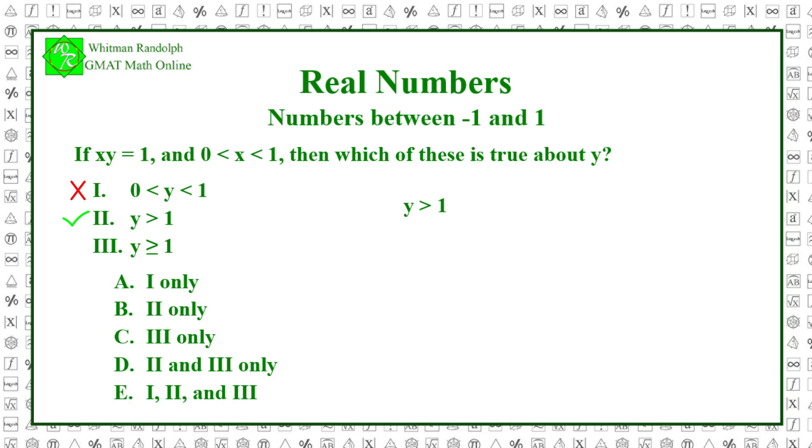Choice 3 is misleading because it says y is greater than or equal to 1, and we know it cannot be equal to 1. However, choice 3 is still true, because if y is, say, 3/2, and x equals 2/3, then y is definitely greater than or equal to 1. Thus, choice 3 is true also. So, the correct answer is D.